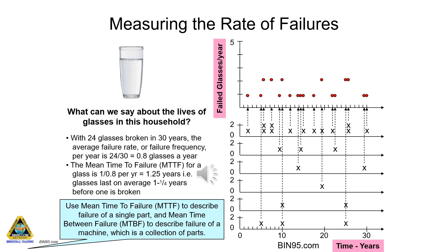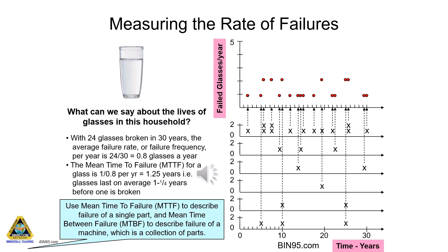Measuring the rate of failures: with 24 glasses broken in 30 years, the average failure rate per year is 24 divided by 30, which equals 0.8 glasses a year. The mean time to failure, MTTF, for a glass is 1 divided by 0.8, which equals 1.25 years — glasses last on average 1 and a quarter years before one is broken. Use MTTF to describe the failure of a single part, and mean time between failure, MTBF, to describe the failure of a machine, which is a collection of parts.